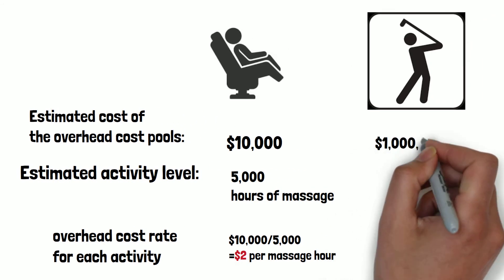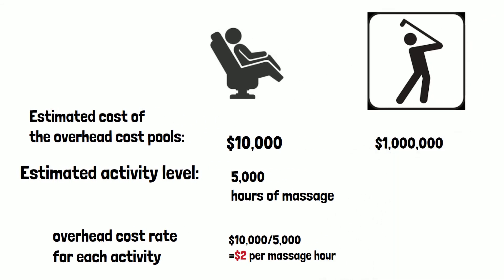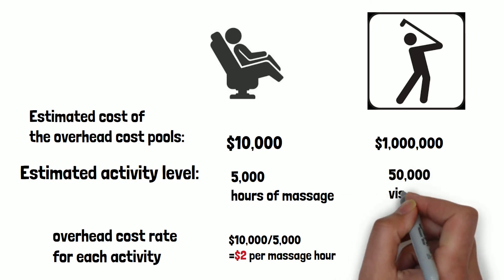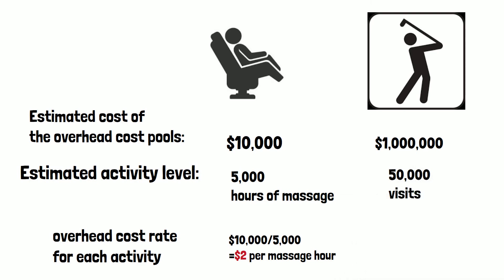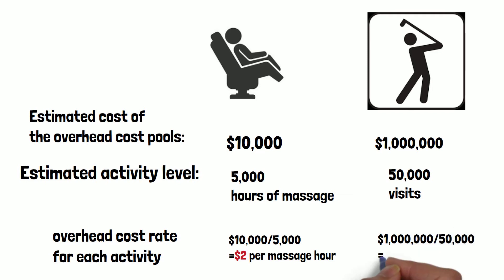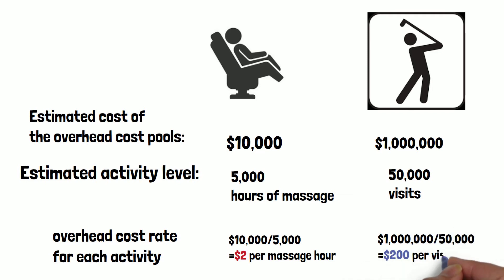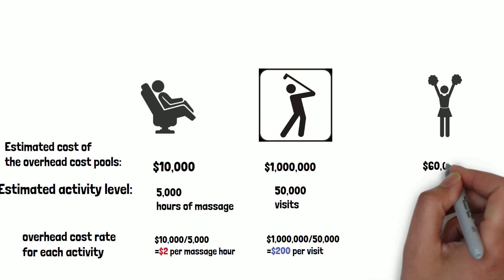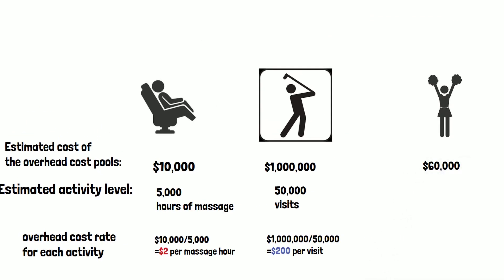Let's take a look at the golf cart. Suppose it costs $1,000,000 to run the golf cart, and the maximum visits would be around 50,000, we assume. So therefore, for each visit, the cost would be $1,000,000 divided by 50,000, which is $20 per visit.